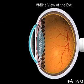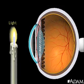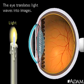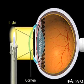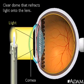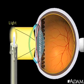Among these are the cornea, the lens, and the retina. Light from this candle can be used to show how the eye translates light waves into images. First, the candlelight passes through the cornea, a clear dome-like structure covering the iris or colored part of the eye. The cornea bends or refracts the candlelight onto the lens.